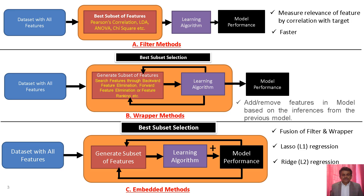This slide shows three types of feature selection methods which are used in machine learning. The names of those three feature selection methods are filter methods, wrapper methods, and embedded methods. First, we will look into what is the filter method.